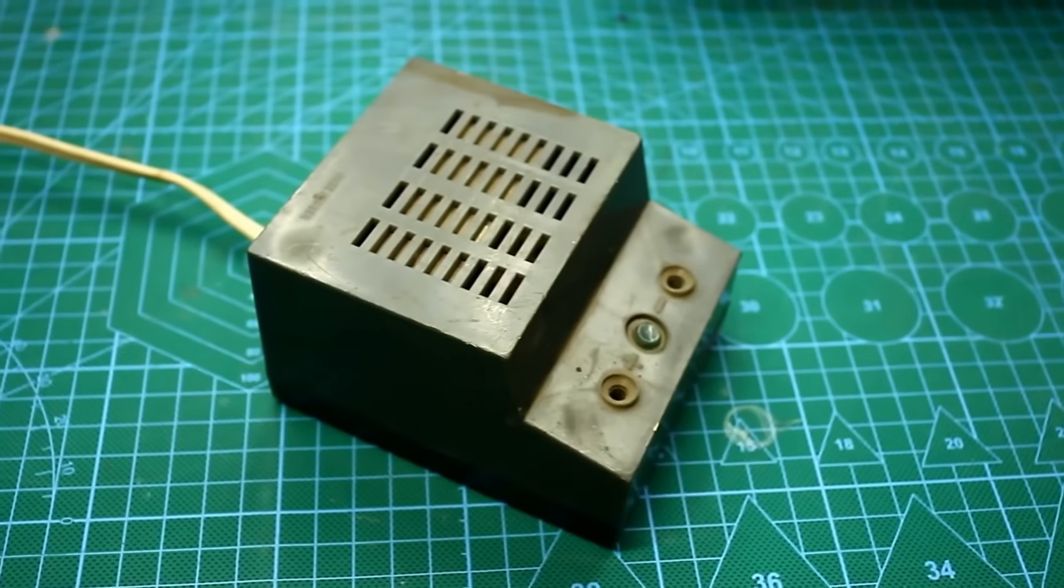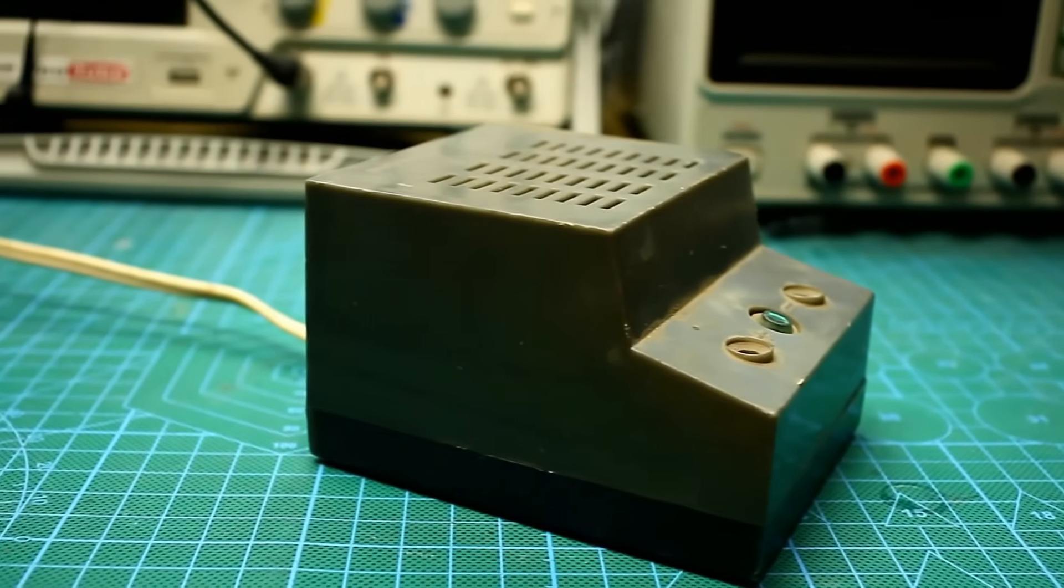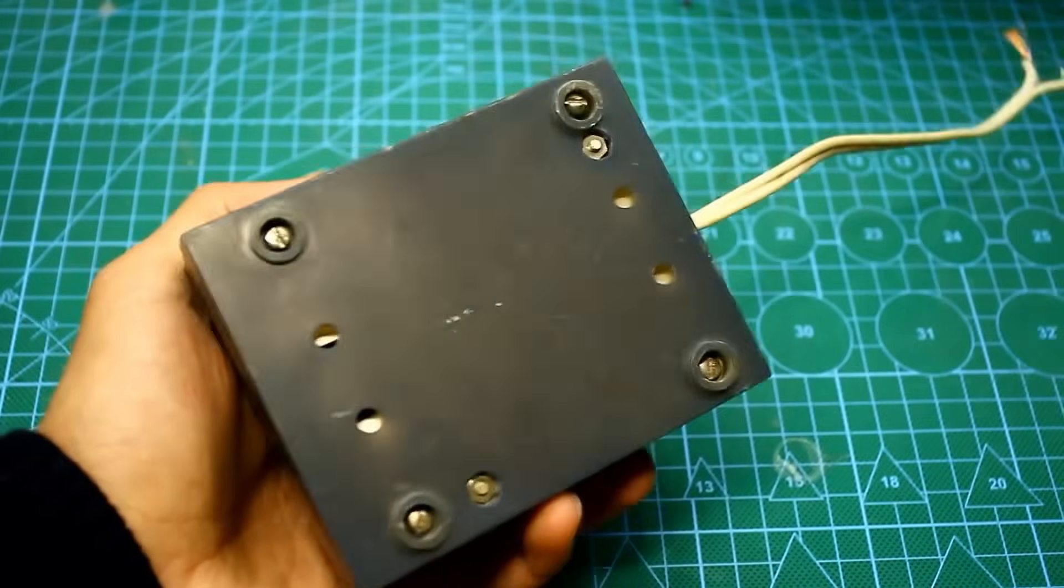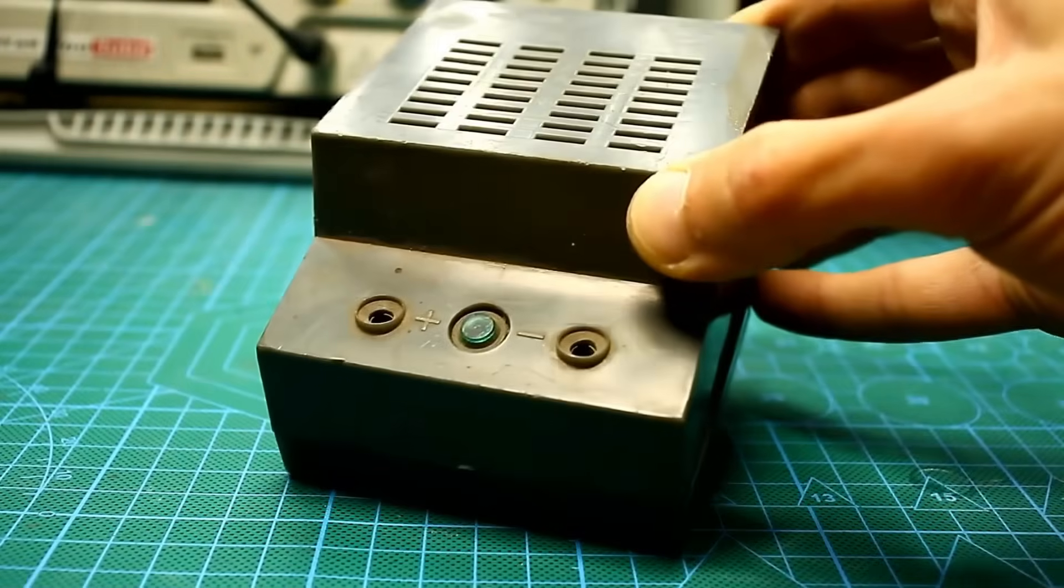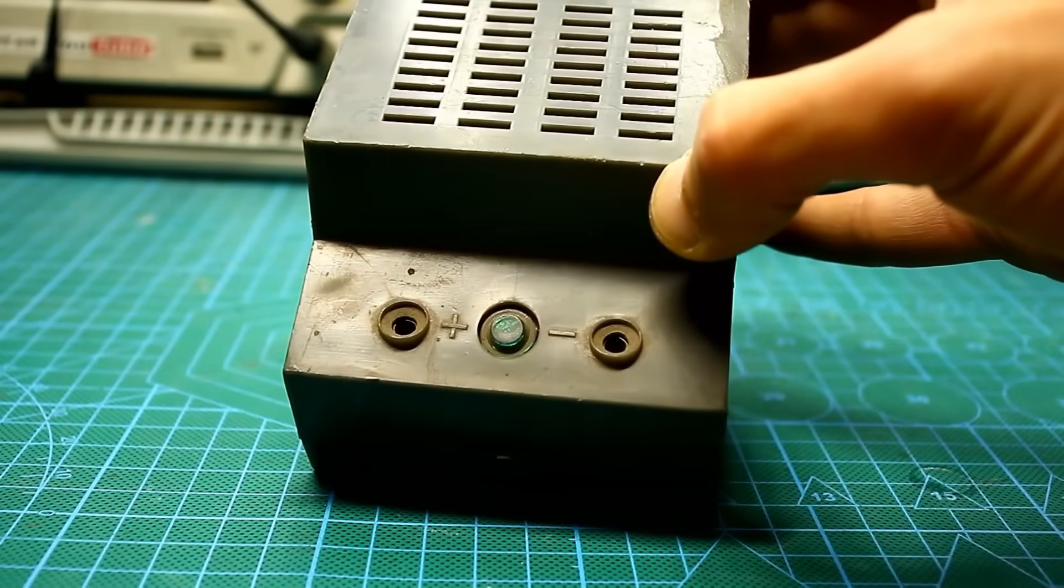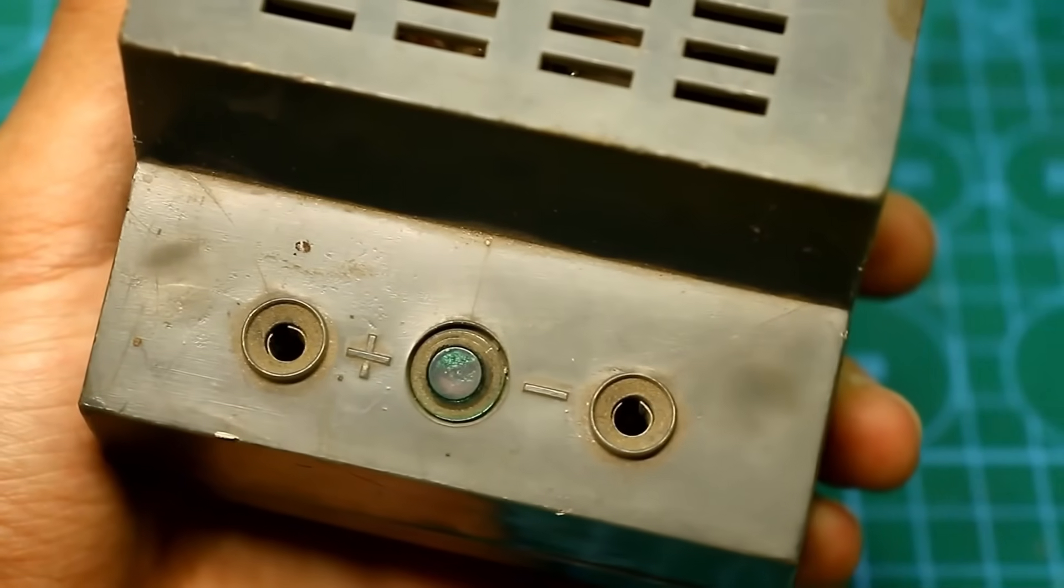When I come across an obscure box at the flea market that has a power cord and says made in USSR, I buy it, regardless of what it is. It's like a box of surprises, you never know what's inside. Judging by the outputs and sockets, it's clear that it's some kind of power supply, but it's unclear what it's for. Opening it up will reveal the truth.